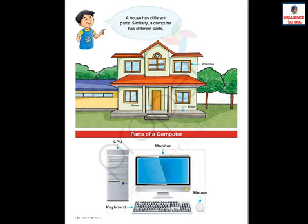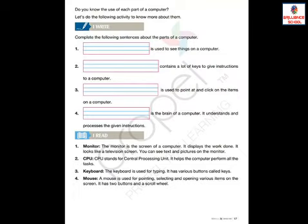Look at the second picture: monitor, CPU, keyboard, and mouse. These are parts of a computer. Without CPU, the monitor cannot work. Without keyboard or mouse, you cannot use the monitor. All these parts are connected to each other — without any one, nothing works. These are the parts of a computer.